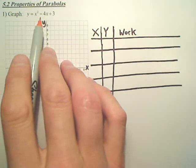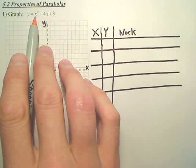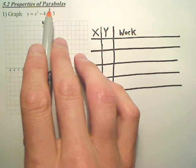I want to graph this parabola. The reason I know it's a parabola is because there's an x squared. Also, the word parabola is right there.